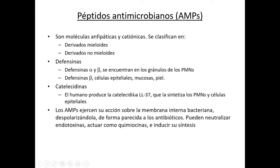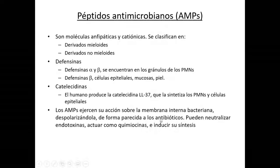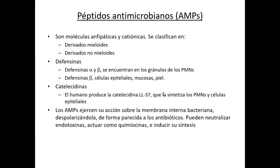Las catelicidinas, en el humano, la que tenemos es la LL37, que la producen los polimorfos nucleares y también las células epiteliales. Lo que hacen es despolarizar la membrana interna de la pared bacteriana, efecto muy parecido a cómo actúan los antibióticos. También los péptidos antimicrobianos pueden neutralizar endotoxinas y tienen actividad quimiotáctica.